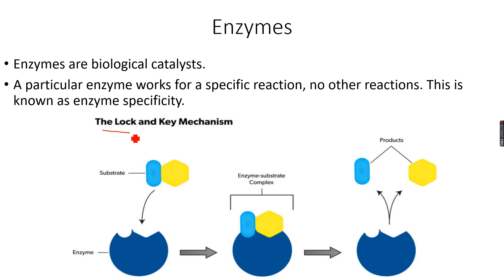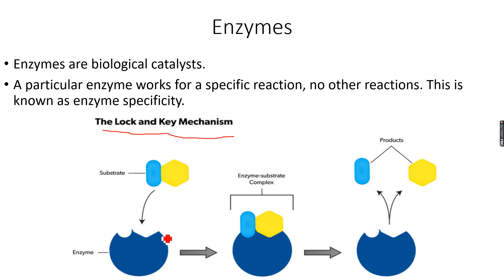Enzyme specificity means it's only for one specific reaction. We can demonstrate this using the lock and key mechanism, also known as the lock and key model. Just as a lock has a specific pattern inside and only a particular key can unlock it, similarly an enzyme only speeds up a particular reaction. An enzyme has a specific shape.